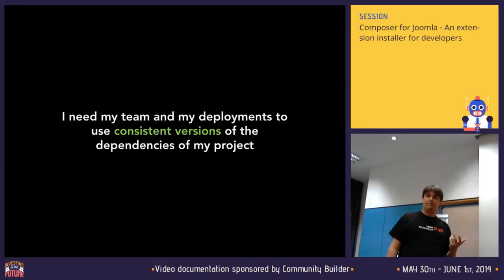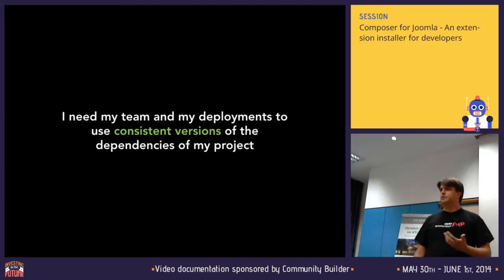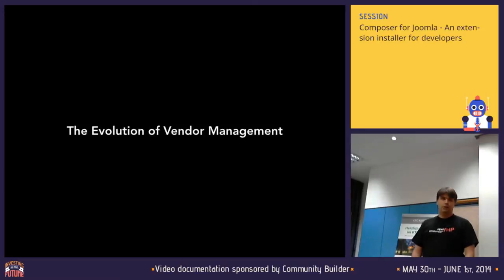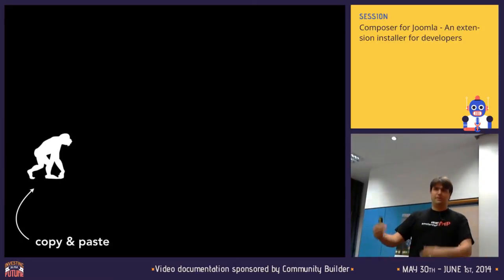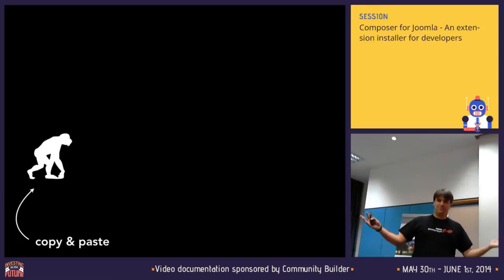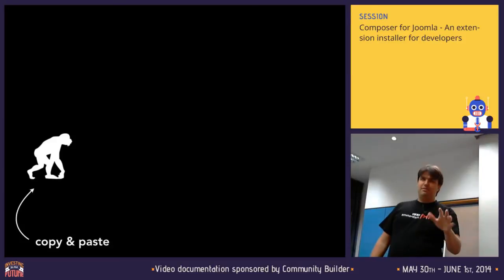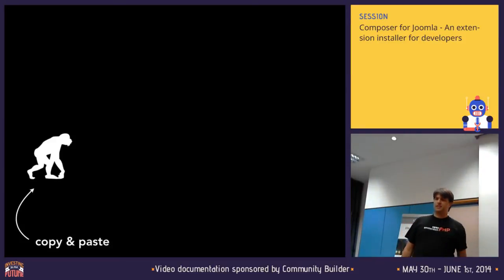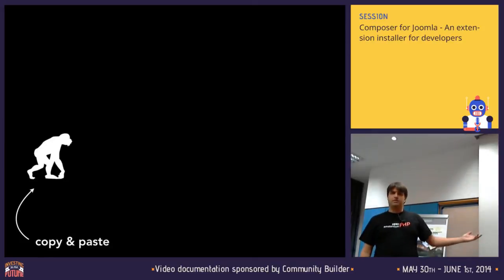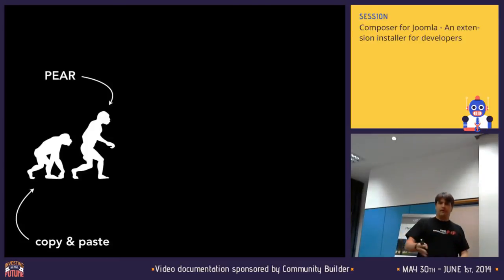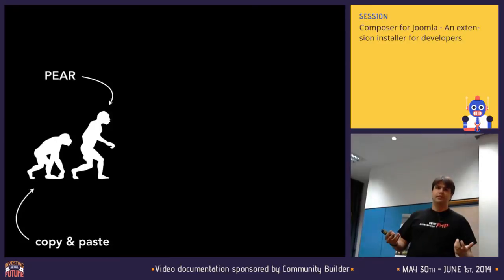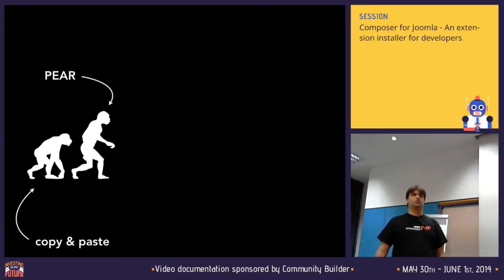To give you a bit of background on the evolution of managing third-party things in PHP: it all started a long time ago with copy-paste — download the zip file and drop it into your project. Back then, version control — we didn't know that, right? Maybe got started with CVS, and then PEAR came out. PEAR was the evolution of managing third-party dependencies, but it was very restricted to the things that were in PEAR, which weren't that many. They were good for base packages but you had a limited set to choose from.